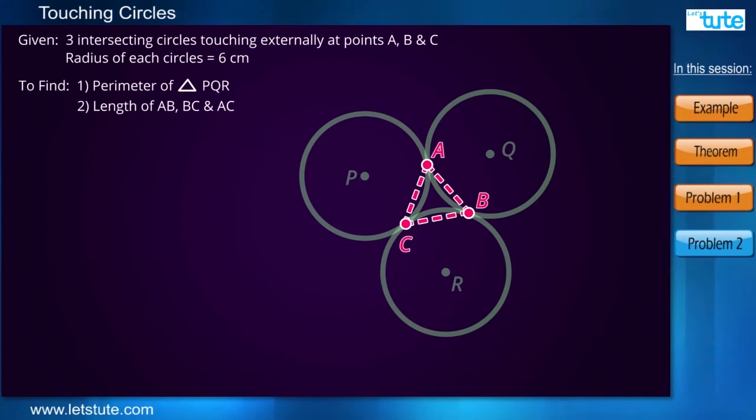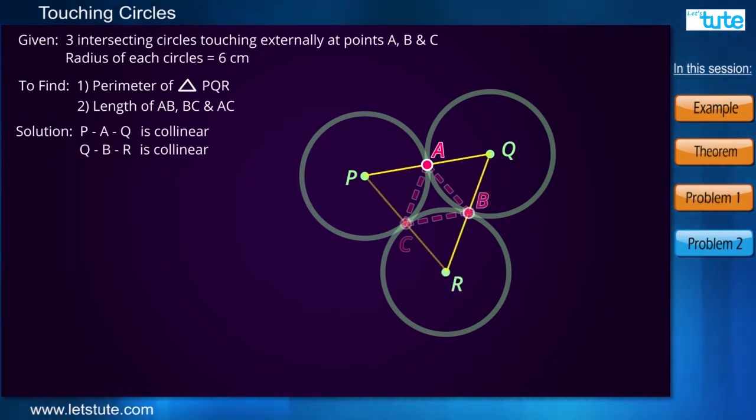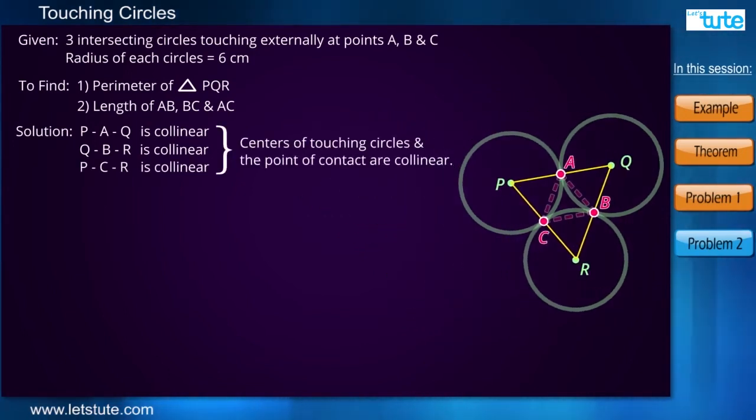Now since we have just learned that point P, A and Q will be collinear. So this will be one side of the triangle and in the similar way, QR will be the other side and PR will be the third side of the triangle. What exactly does perimeter mean? Perimeter is nothing but the addition of all the three sides of the triangle, right?